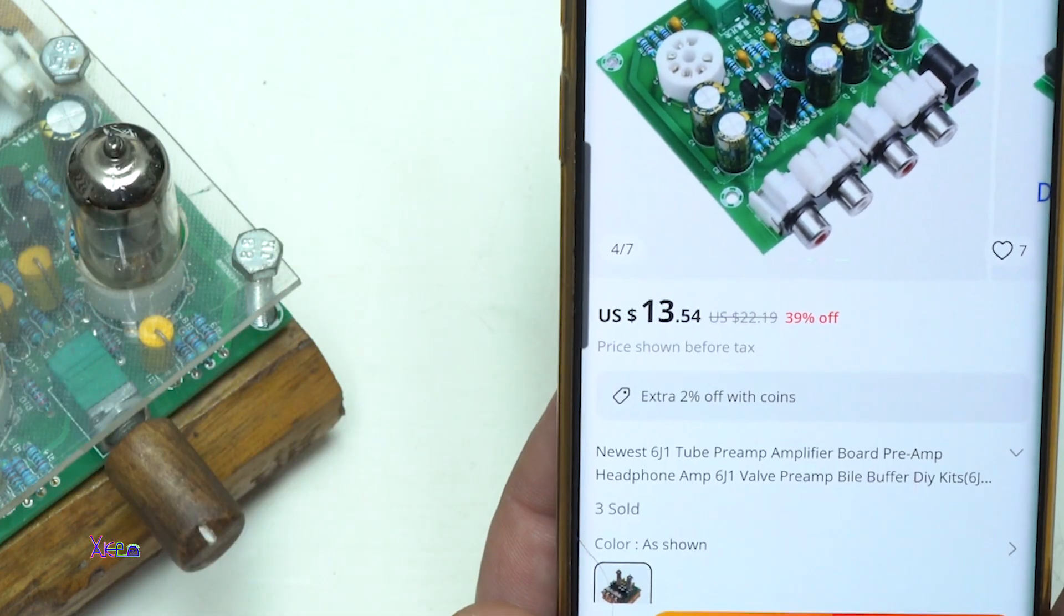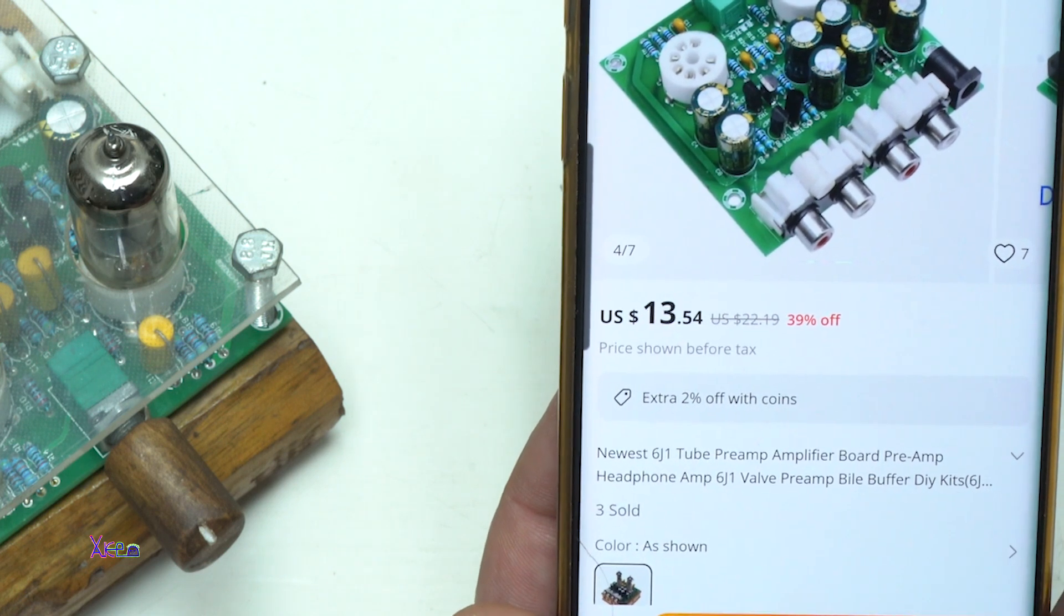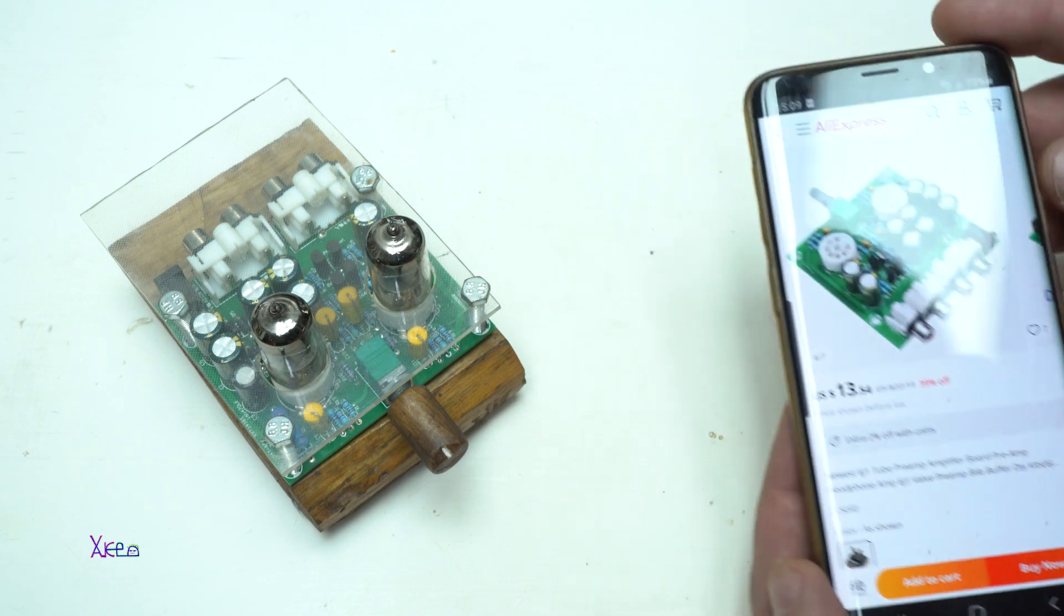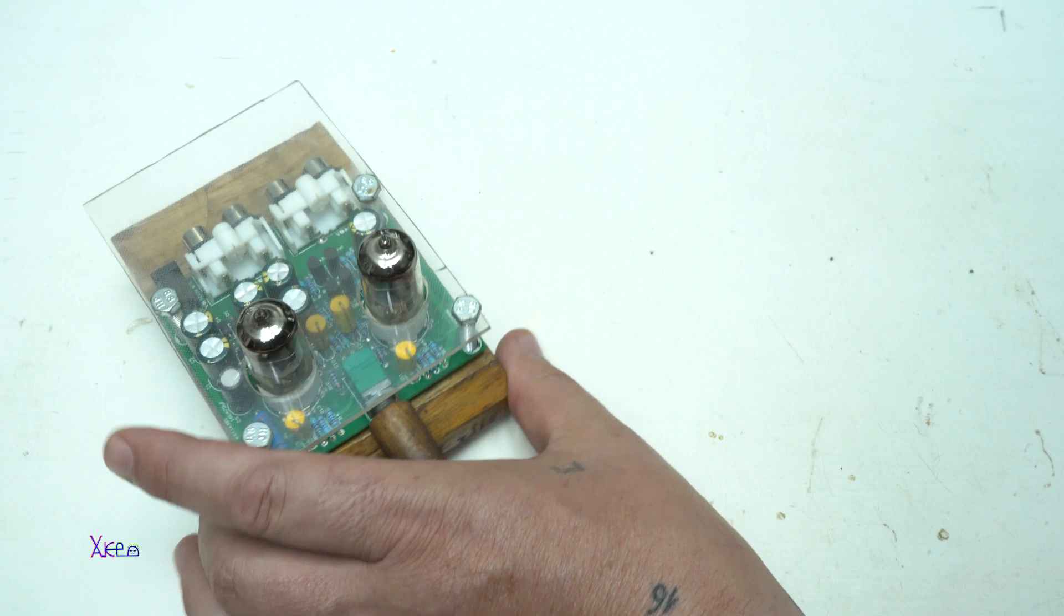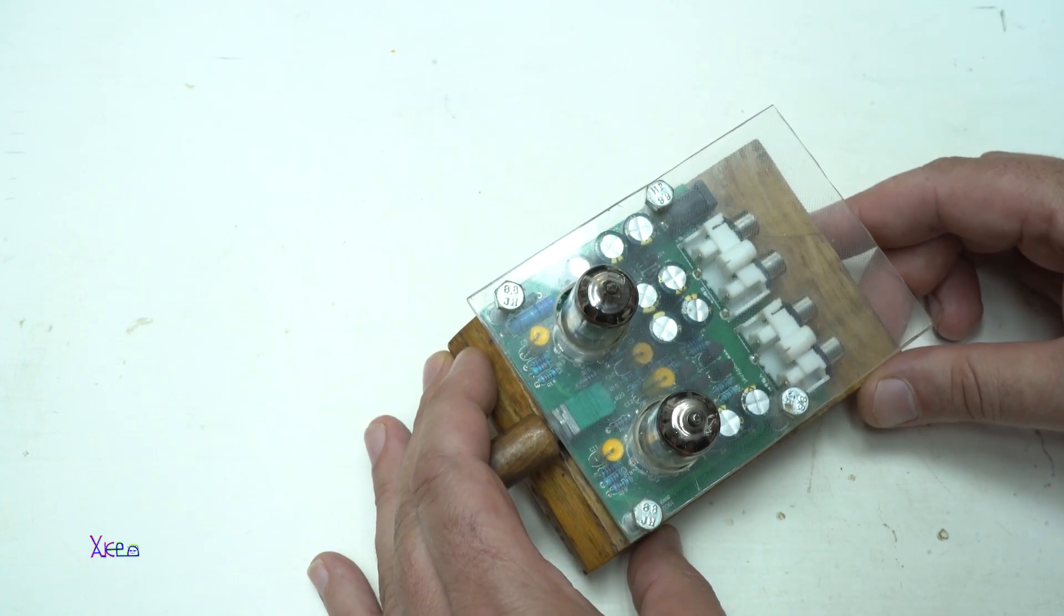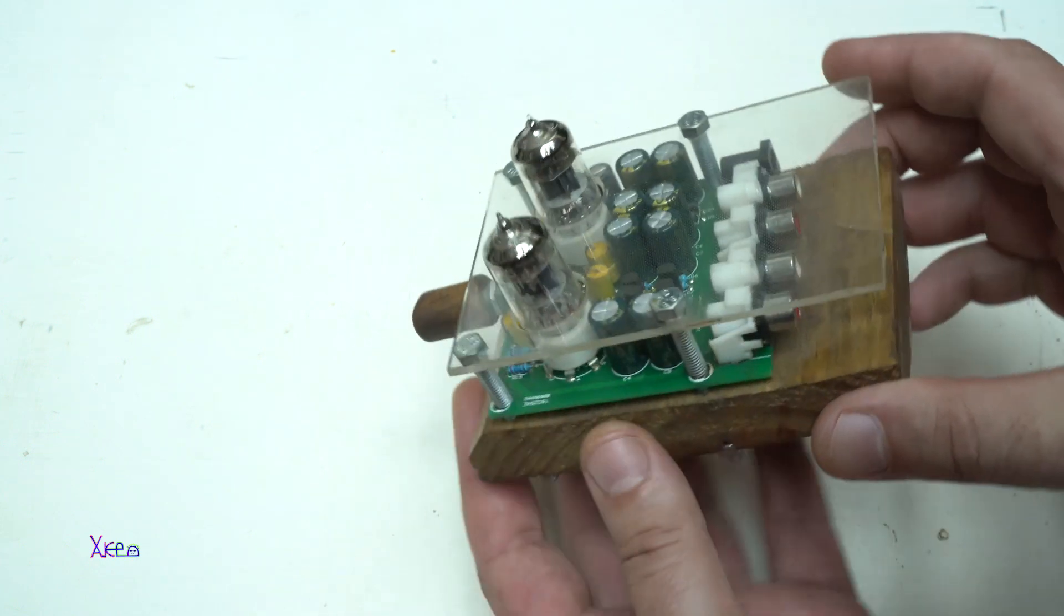Those tubes are 6J1 tube preamplifier board for headphones, and it works. You need to know this: it requires 12 volts up to 24 volts AC voltage.